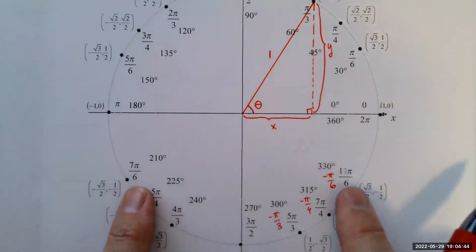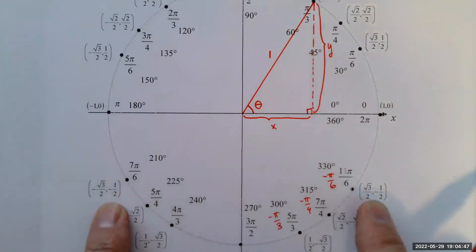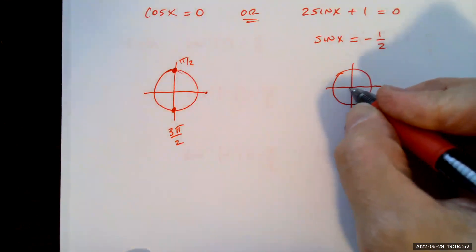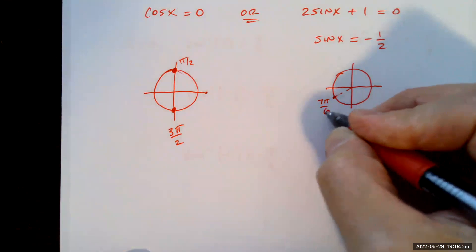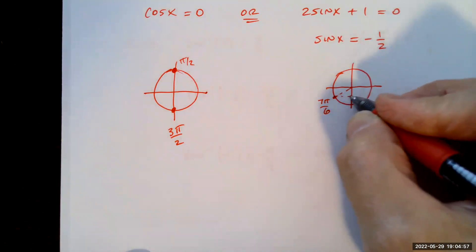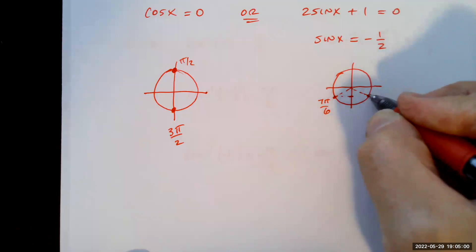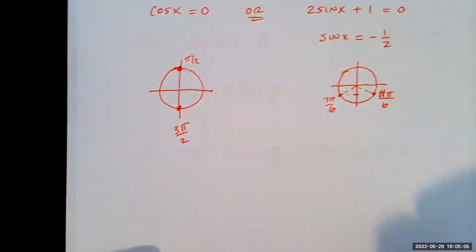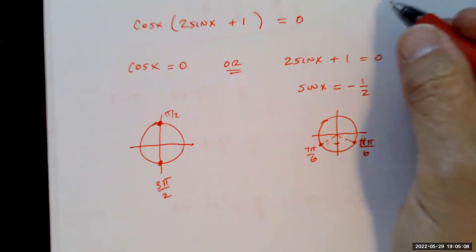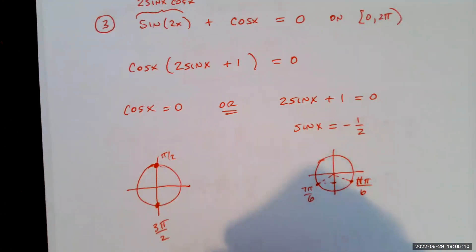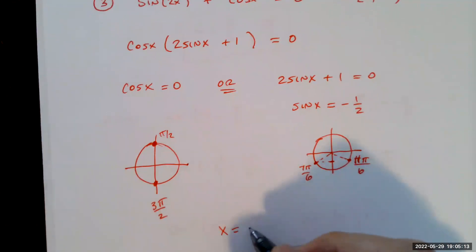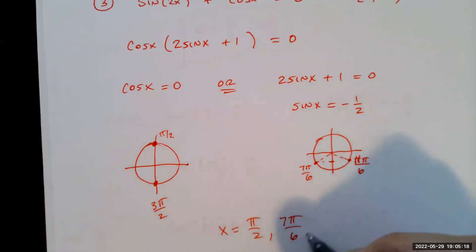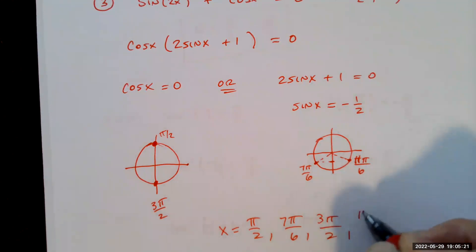Our four solutions on the interval from 0 to 2π are, in increasing order: x equals π/2, 7π/6, 3π/2, and 11π/6.